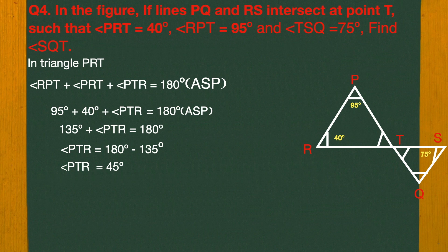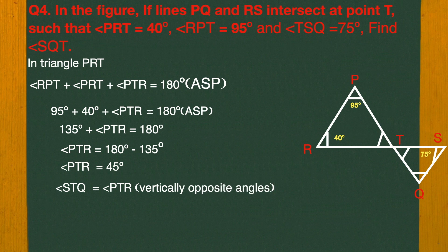Now, angle PTR and angle STQ — what are these called? These two are vertical opposite angles. So angle STQ equals angle PTR equals 45 degrees. STQ's value is 45 degrees.